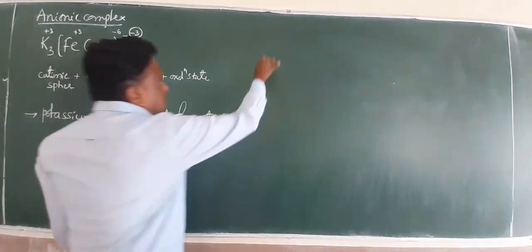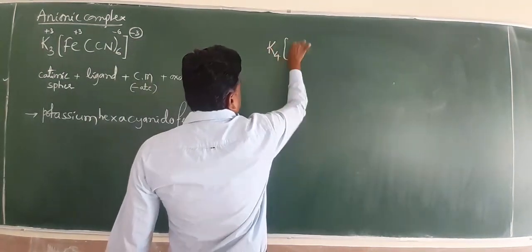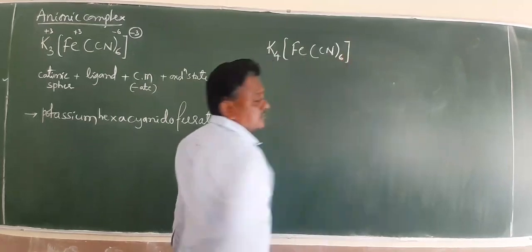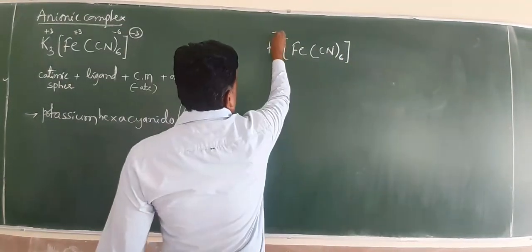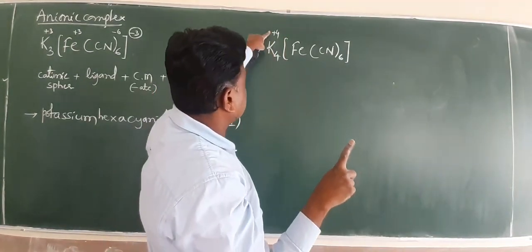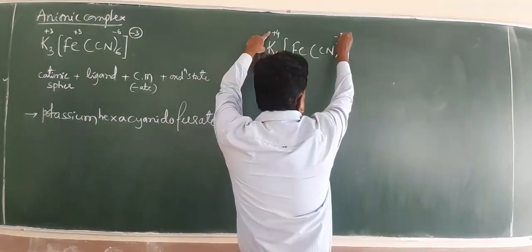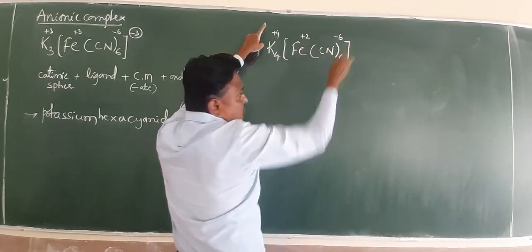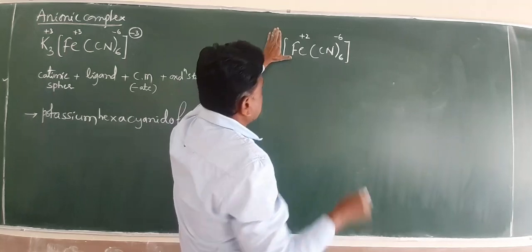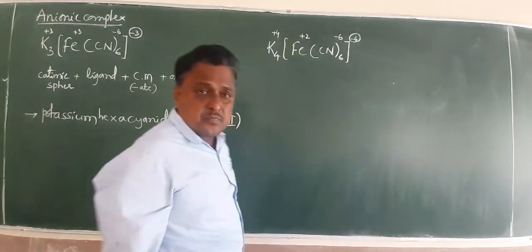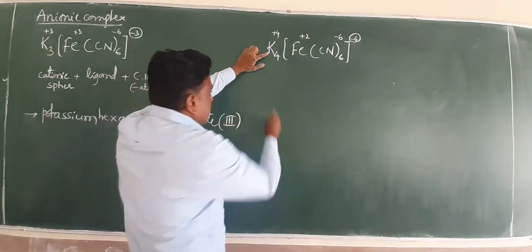Very simple. I have to change just one. CN is 6. Potassium is plus 1 each, total 4, plus 4. CN each minus 1, minus 6. Obviously plus 2, total 0.